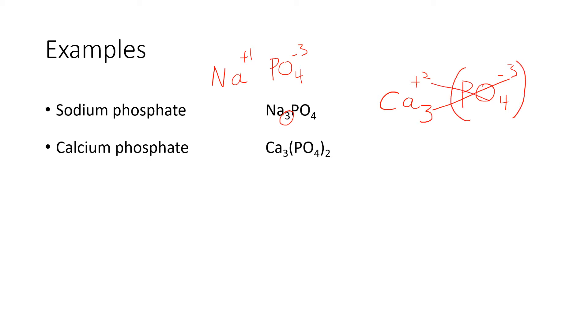And with polyatomic ions, if we need a subscript other than 1, which is understood and not written. So, in other words, if we need something like a 2, a 3, or a 4. We have to put the polyatomic ion in parentheses and put that subscript outside of the parentheses.